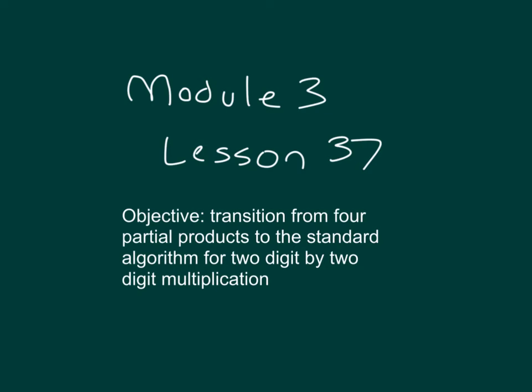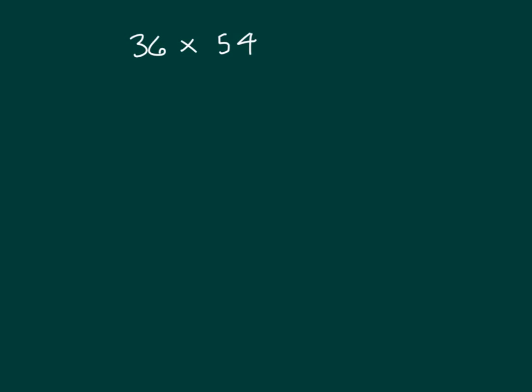The objective is to transition from four partial products to the standard algorithm for two-digit by two-digit multiplication. Here we have 36 times 54. Let's go ahead and draw out the area model with four partial products so that we can see what that looks like.